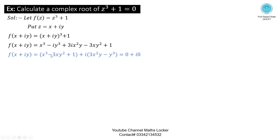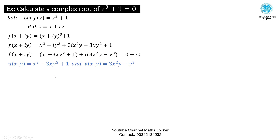Writing in bracket form, taking i·x common: the imaginary part becomes i·x·(3x²y − y³). Setting equal to 0 + i·0 and comparing real and imaginary parts: u(x, y) = x³ − 3xy² + 1 and v(x, y) = 3x²y − y³.